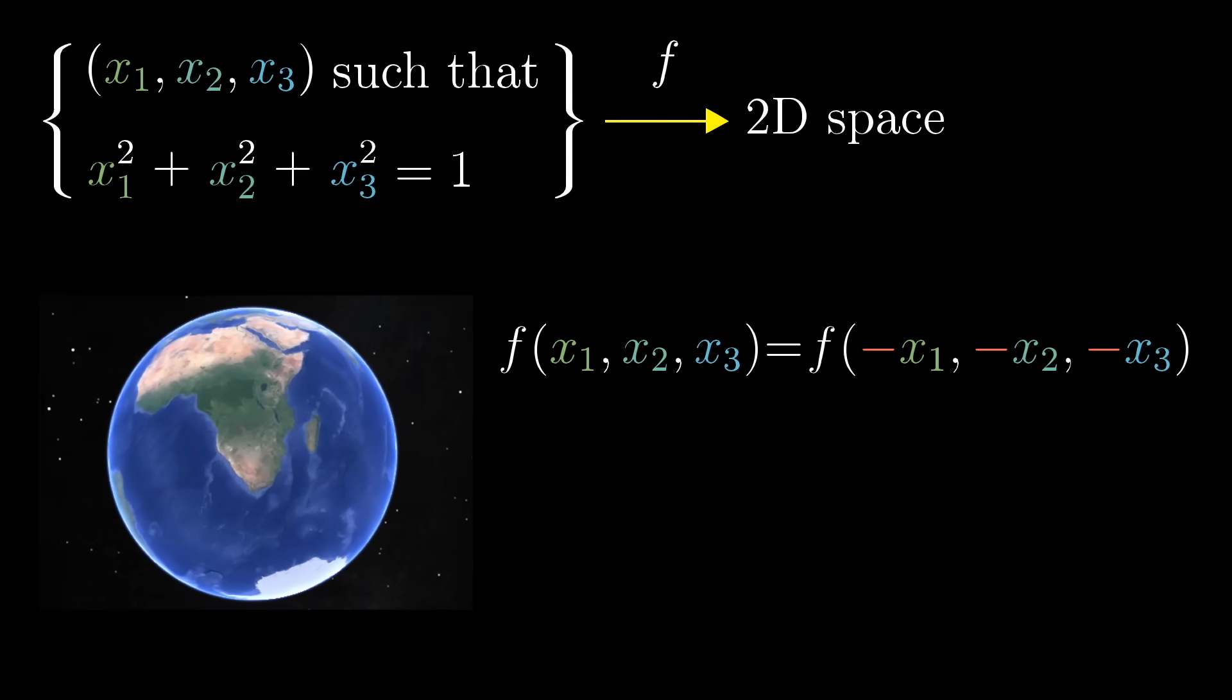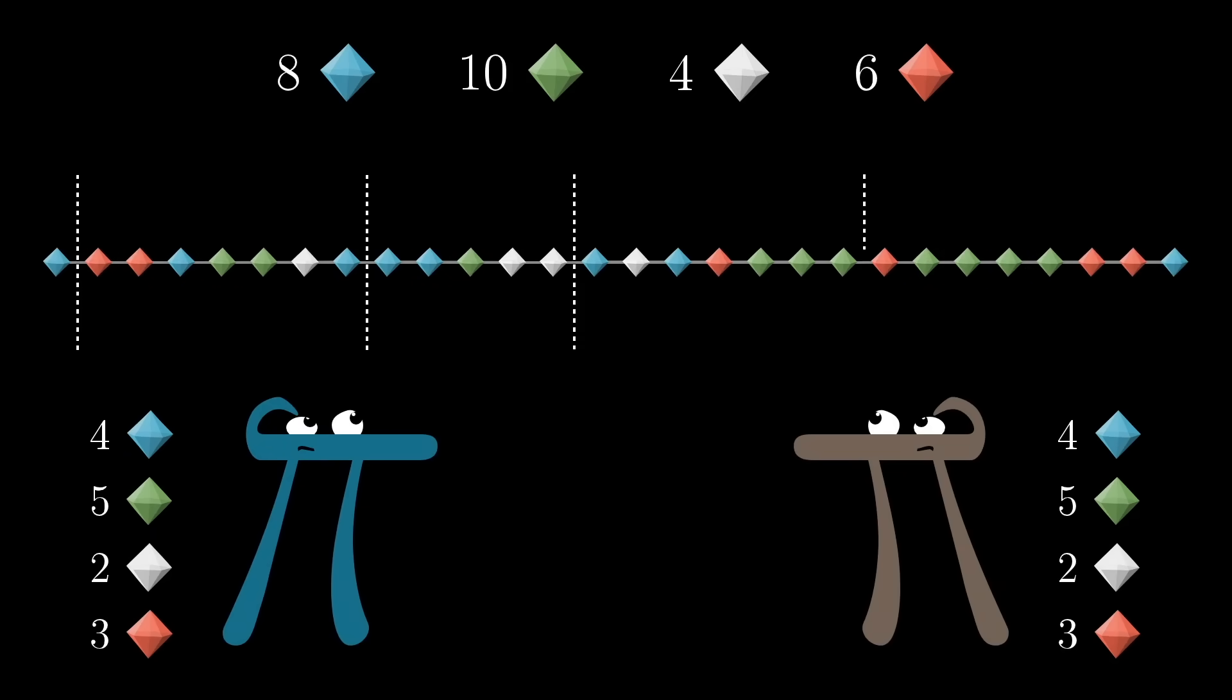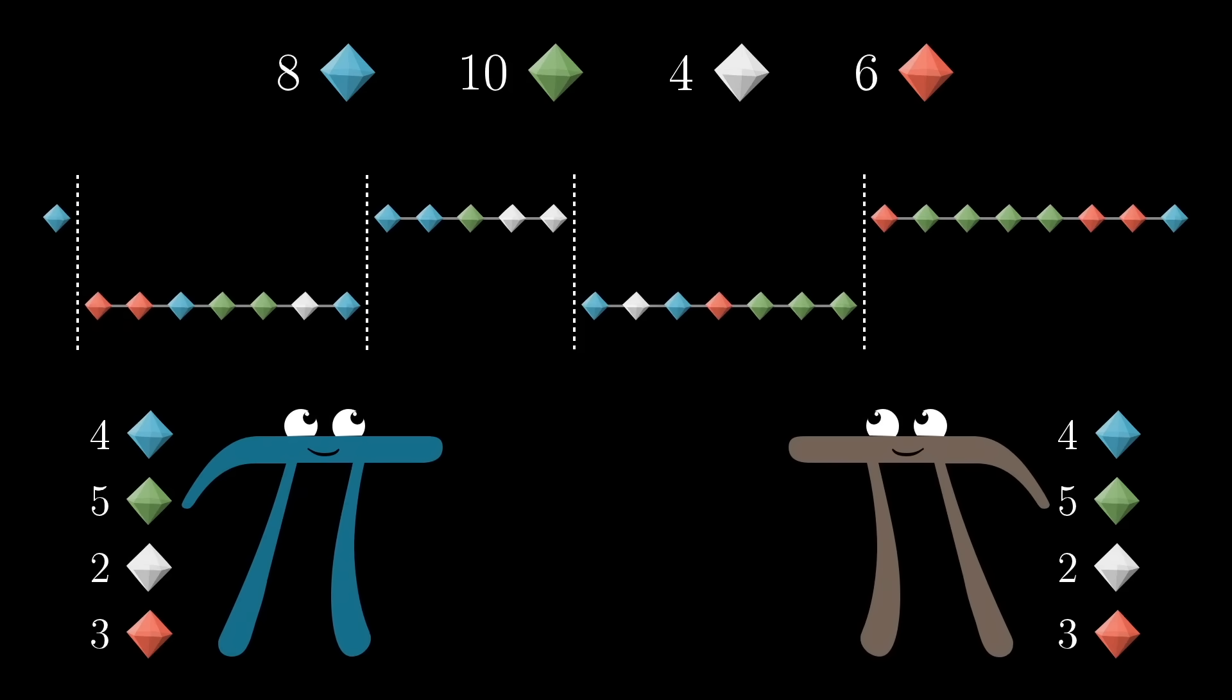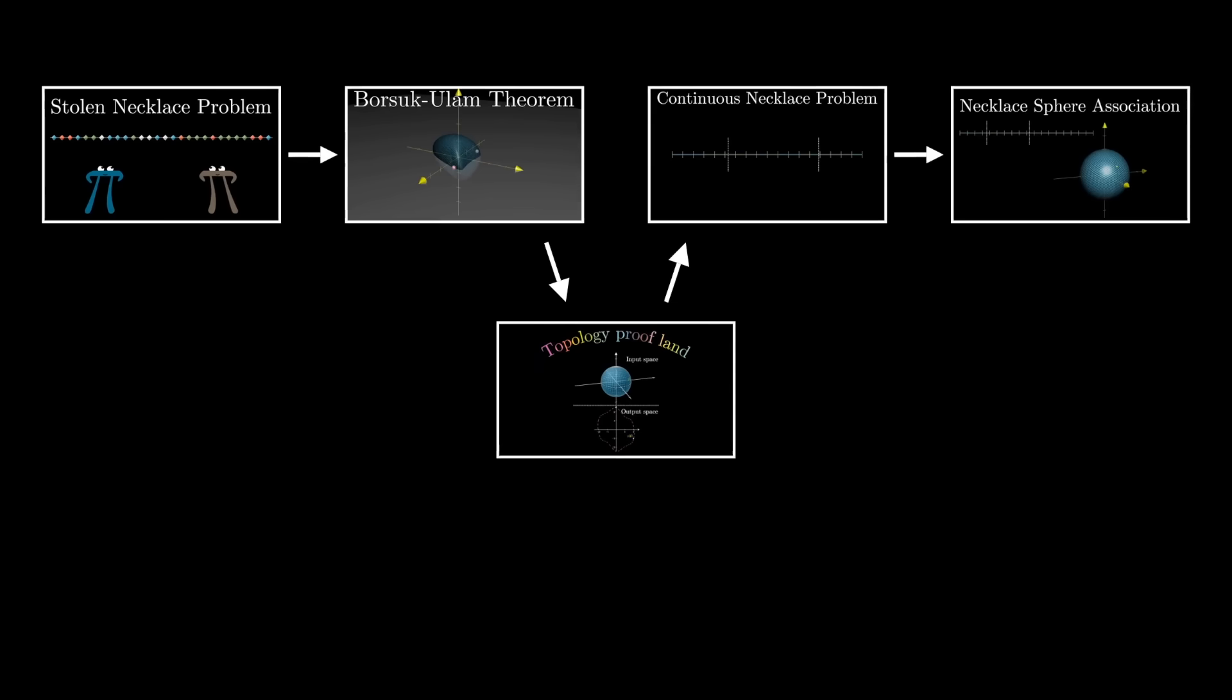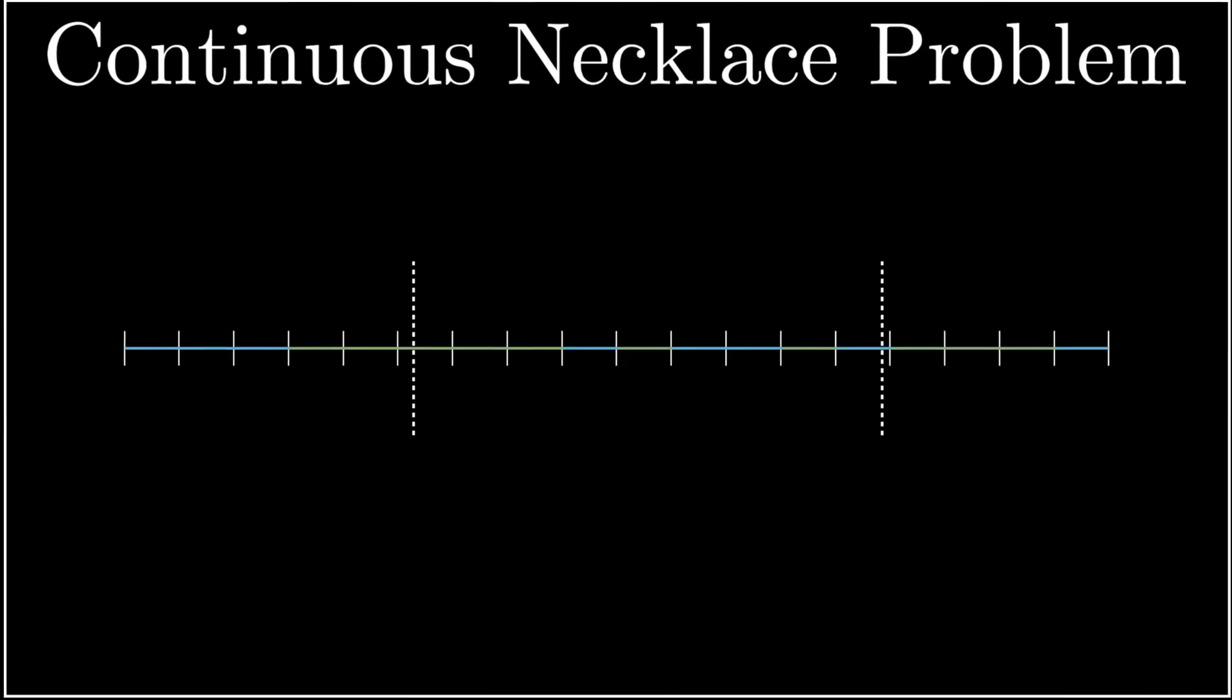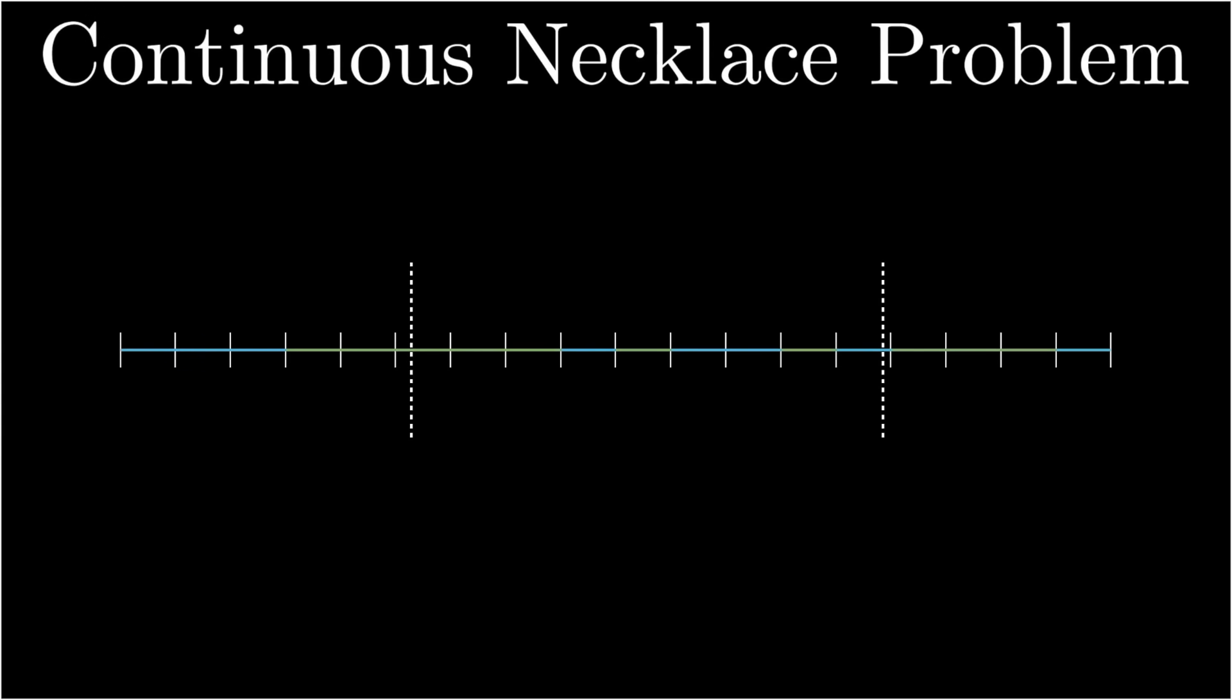With that in mind, look back at the necklace problem. Part of the reason these two things feel so very unrelated is that the necklace problem is discrete, while the Borsuk-Ulam theorem is continuous. So our first step is to translate the stolen necklace problem into a continuous version, seeking the connection between necklace divisions and points on the sphere.